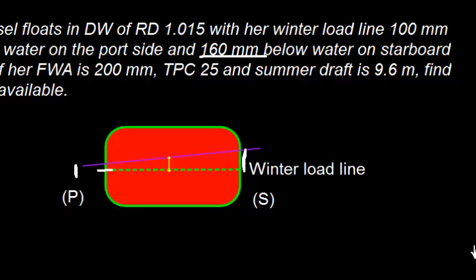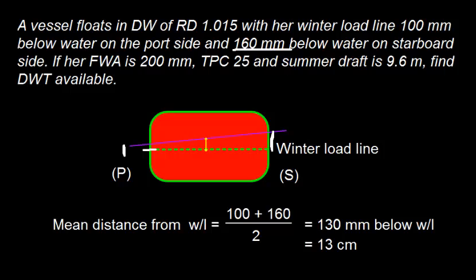We can find the average distance. The mean distance of the winter load line mark from water line is 100 plus 160 divided by 2. On both port and starboard sides, they are below the water line. So the mean distance of the winter load line mark is 130 mm or 13 cm below water line.